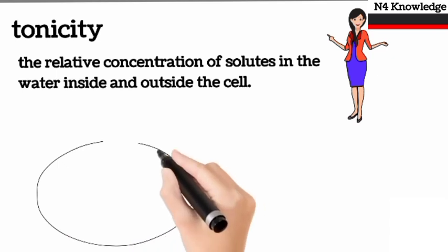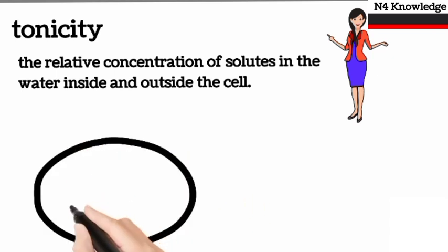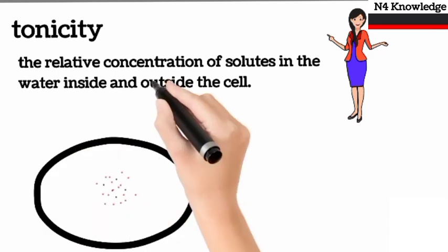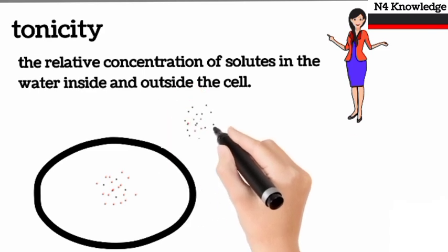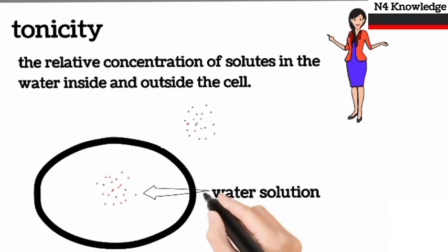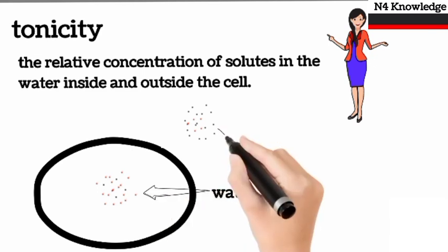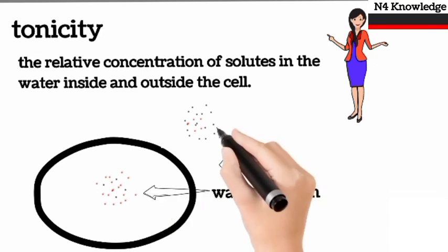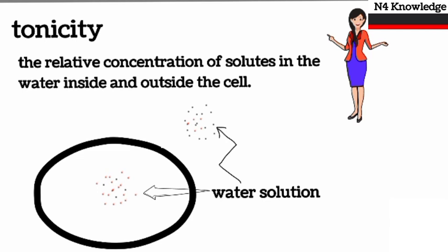Here is the diagram through which we can understand tonicity easily. As we can see, we have two types of solutions: the solution inside the cell and the solution outside the cell. Tonicity means that the solution inside and outside the cell contain how much solute and solvent comparatively.